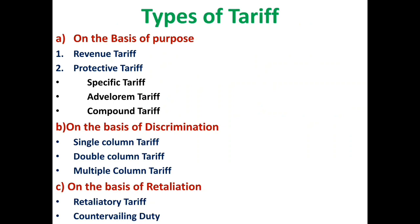Moving to the third classification on the basis of retaliation. Retaliatory tariff is imposed as a retaliation against other countries whose trade policy harms our country or our exports. Countervailing duty is imposed as an additional duty on commodities whose export prices are reduced when the government provides export subsidy — that is, to offset the impact of subsidies and the ability of traders to reduce their prices.